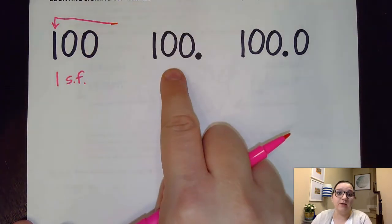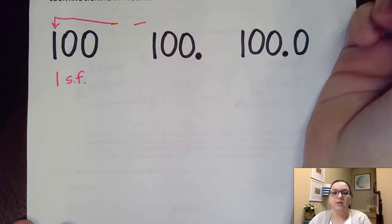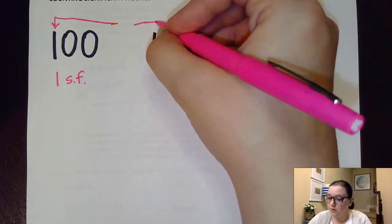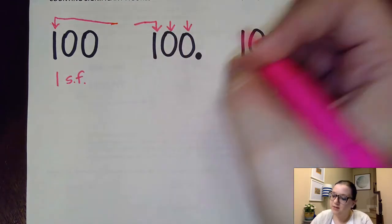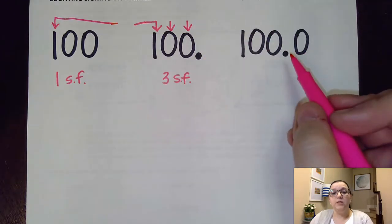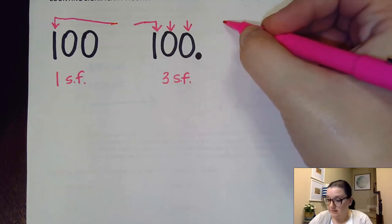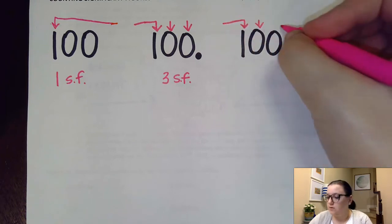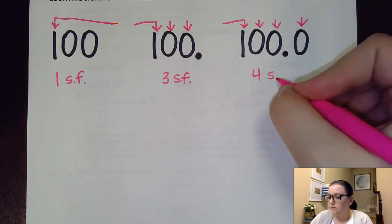This 100 has a decimal that's present, so I start counting from the opposite direction. Again, I count starting at the first non-zero digit, which here is the 1. Once I start counting, I count everything else — so this particular number has three significant figures. This last one also has a decimal that's present, so I start counting from the Pacific Ocean side of the number, starting at the first non-zero digit, and counting everything else. So this one has four significant figures.